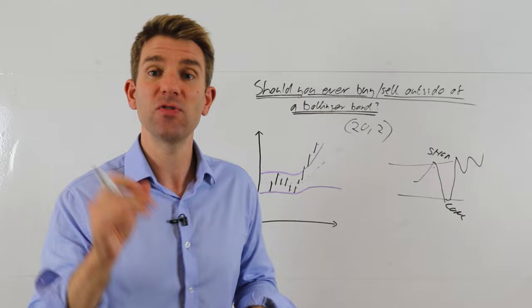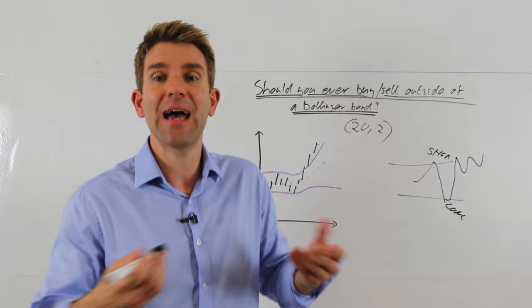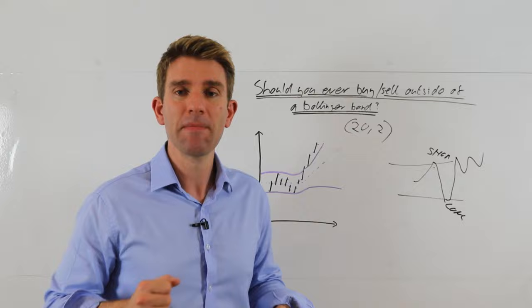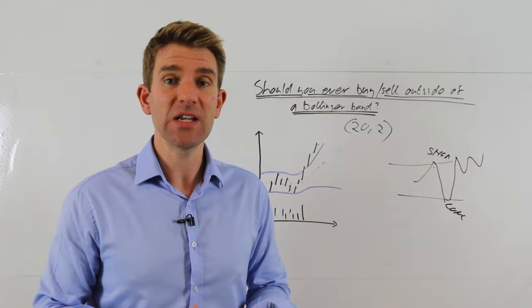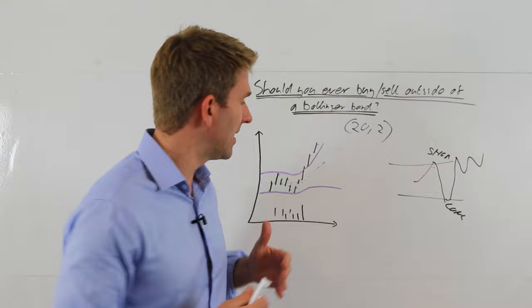If it breaks out of a Bollinger Band with let's say a catalyst, if you're trading the index maybe the Fed's done something, if you're trading currencies obviously the Fed as well, anything that's giving it a reason to do it and you see increased volume on the breakout, good volume, then you might consider chasing it a bit.